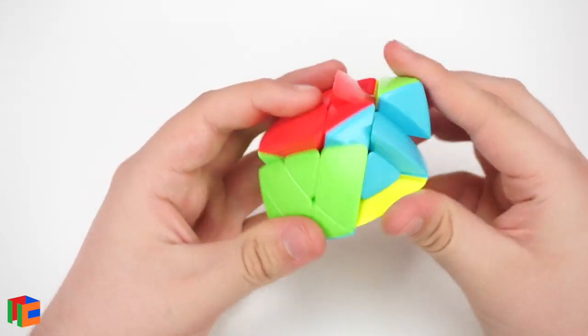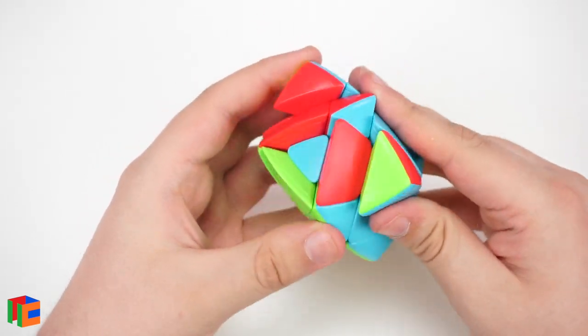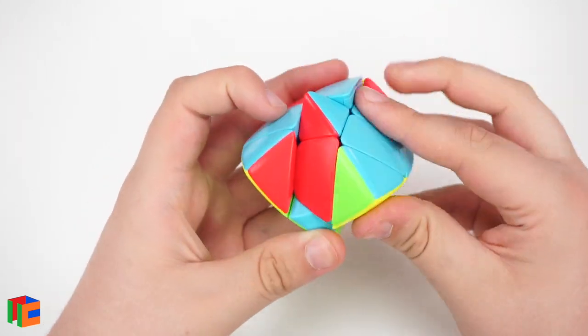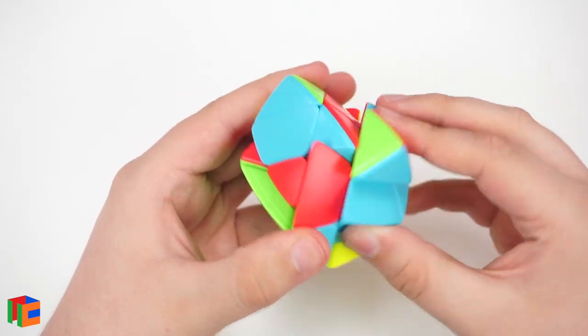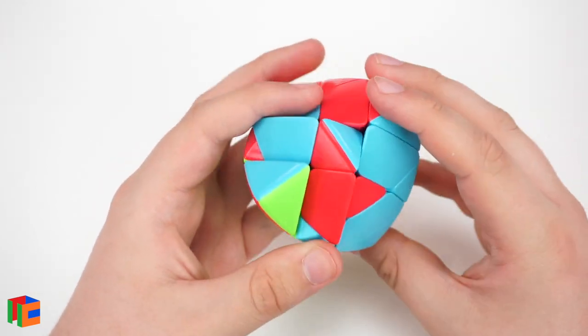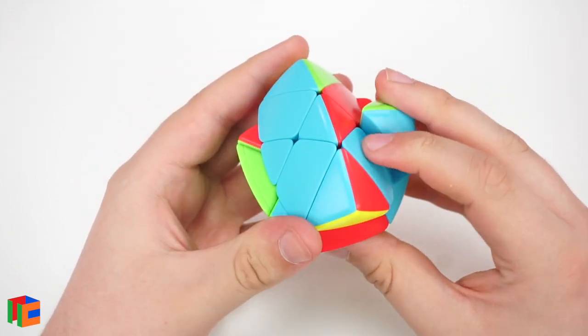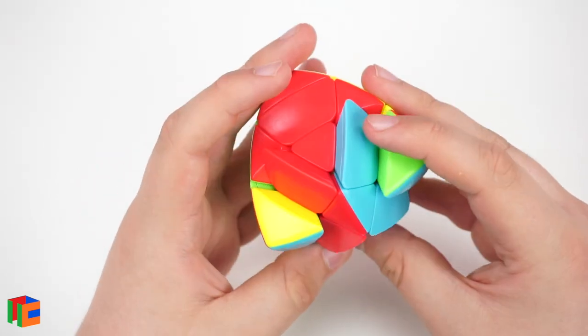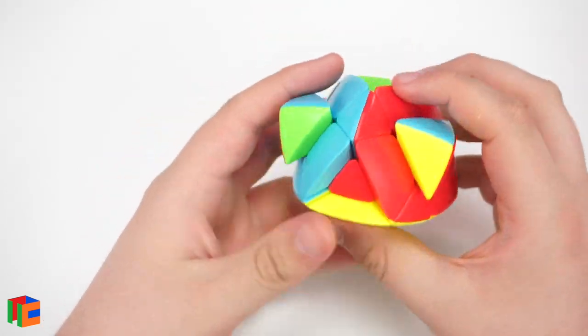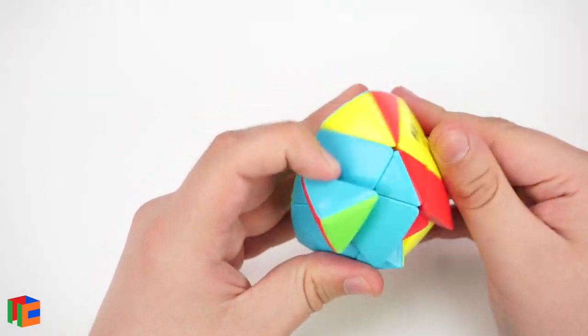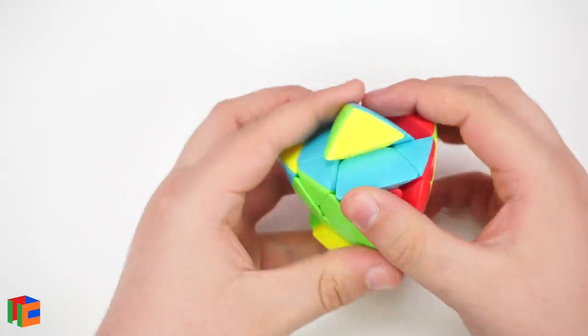So, one more time. There we go. So, hopefully, all of these corners go in alright. This is where the parity can occur. Yay, it looks like we didn't get it.